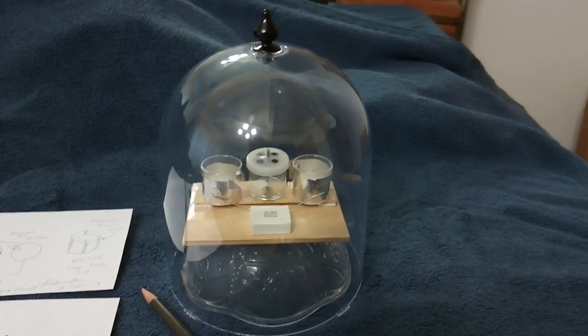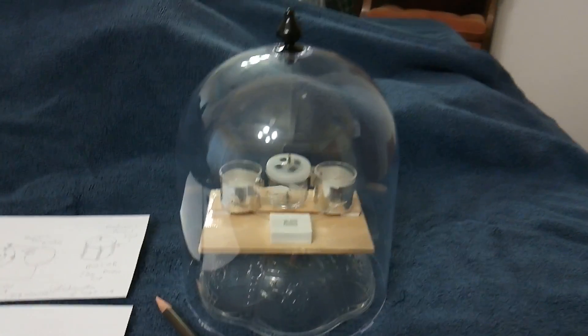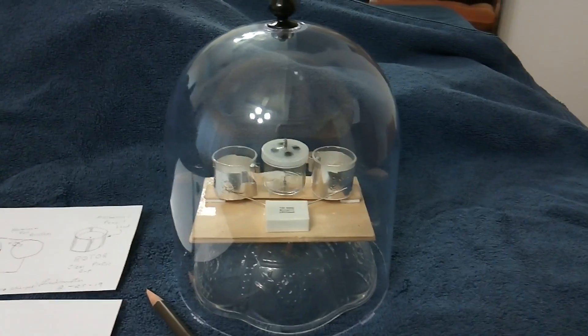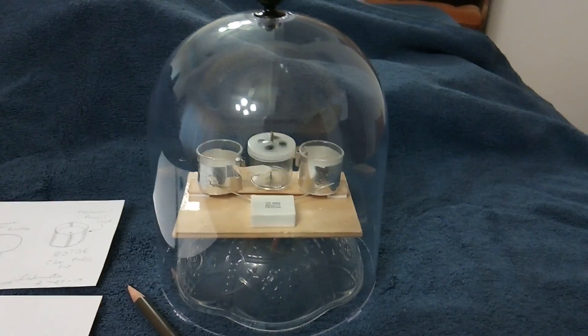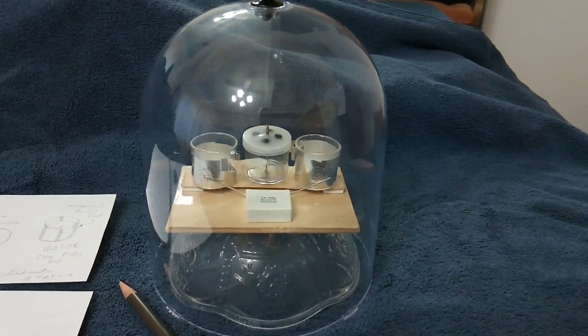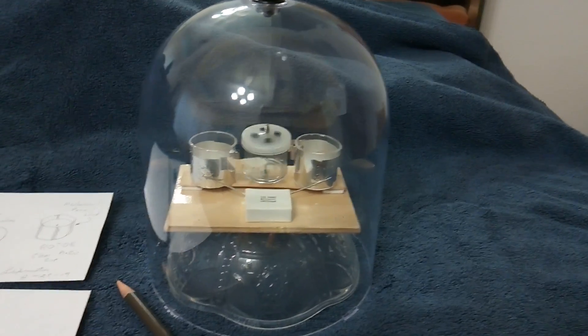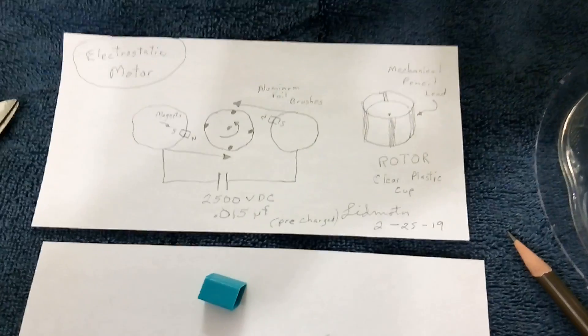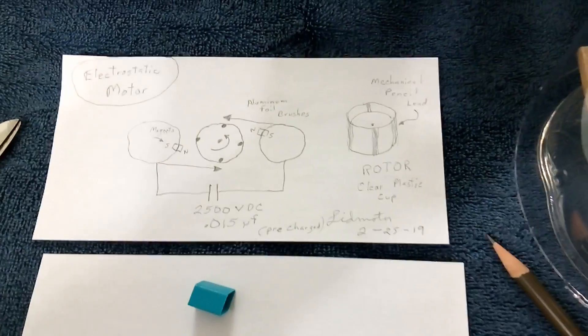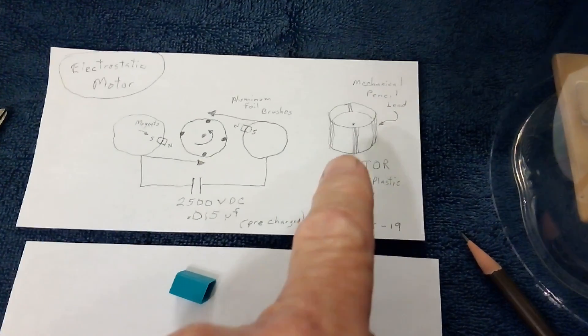All right, well I had some success using this pencil lead graphite on an electrostatic motor. This is a quick view of what I've got going on here. It's just a basic little electrostatic motor, only on the rotor instead of aluminum elements I use these pencil lead sticks.